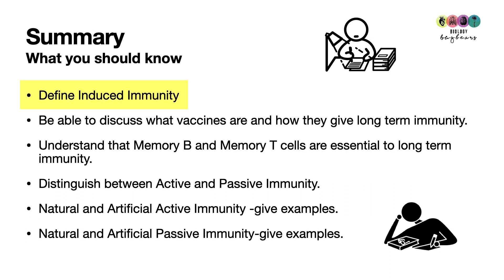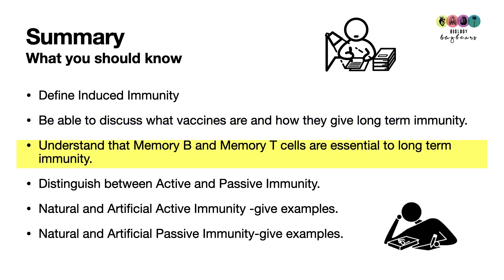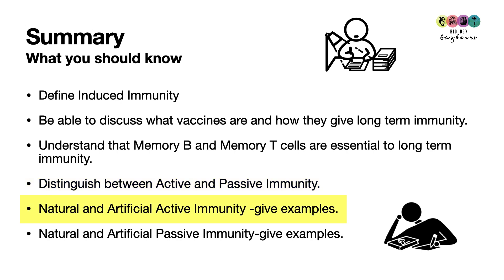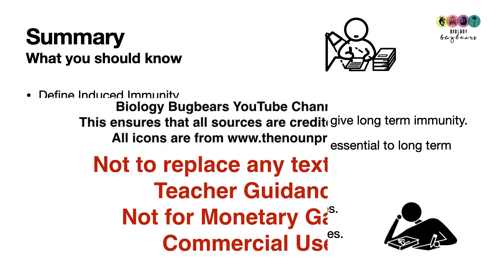At the end of this topic, make sure you can define induced immunity, discuss what vaccines are and how they give long-term immunity, and understand that it's the memory B and memory T cells that are essential to long-term immunity. You should also be able to distinguish between active and passive immunity, and discuss natural and artificial active and passive immunity with examples.